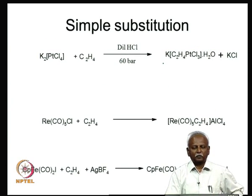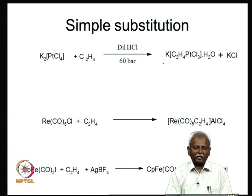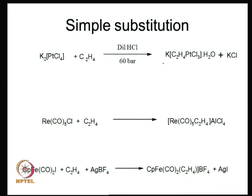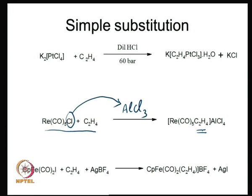Simple substitution reactions are possible with several elements, especially with elements that have a D8 configuration and only 4 ligands around the coordination sphere — it is very easy to add or substitute a ligand. Here is an example with rhenium, where AlCl3 in the reaction medium grabs the chloride ion, forming an ReCO5+ moiety that is coordinately unsaturated. It then grabs the ethylene and forms an ethylene complex, with AlCl4− as the counter ion.